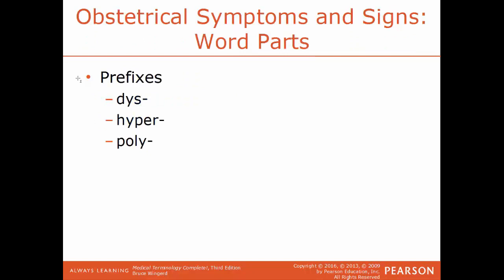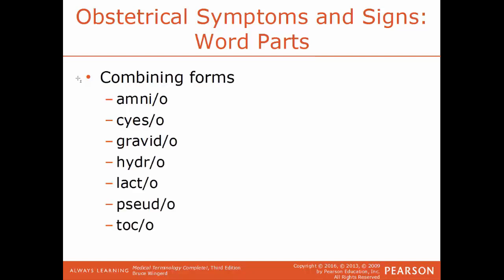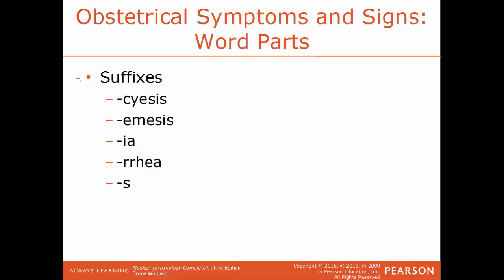Now we'll talk about some obstetrical symptoms and signs — word parts. Prefixes: dys means painful or abnormal; hyper means above; poly means more than one. Combining forms: amnio references the amniotic sac; kyeso is pregnancy; gravido is pregnancy; hydro is water; lacto is milk; pseudo means false; toco means birth or labor. Suffixes: kyesis is pregnancy; emesis is vomiting; ea is a condition; rrhea is a flow or discharge.